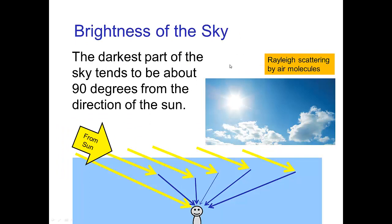One example of this: on a very clear day, if you look around the sky, the darkest part tends to be 90 degrees from the direction of the sun. The part of the sky more towards the sun gives forward scattering, the part opposite the sun gives backward scattering. With Rayleigh scattering, backward scattering is also strong — the weakest Rayleigh scattering is light perpendicular to the sun's rays.